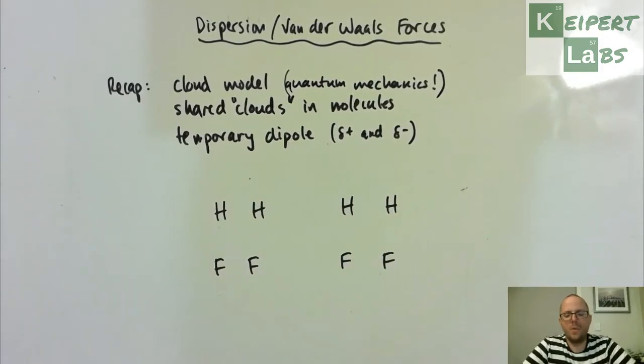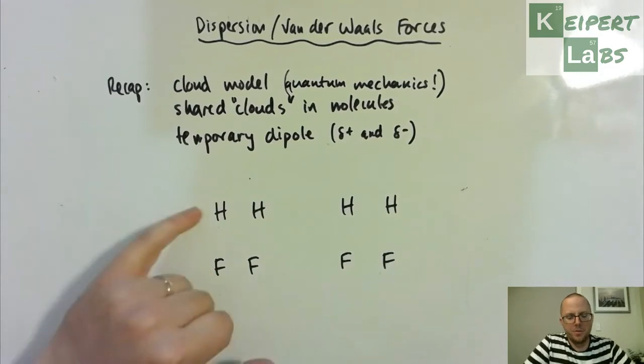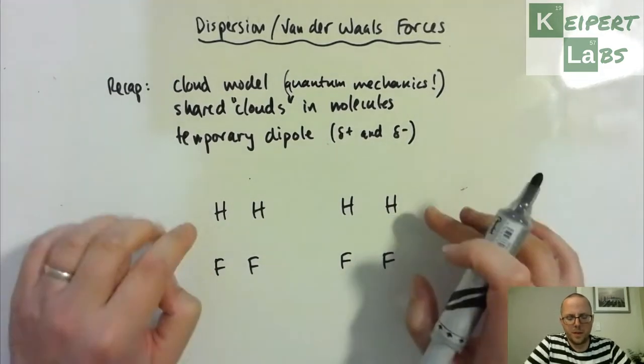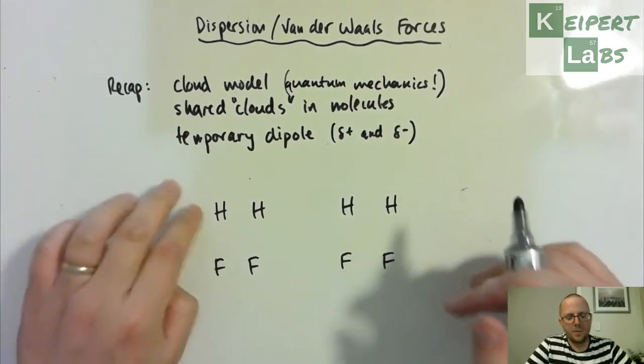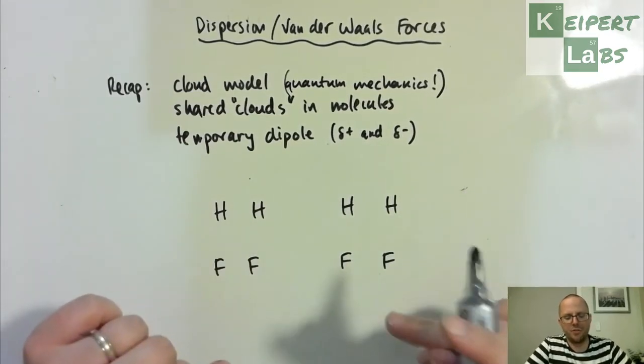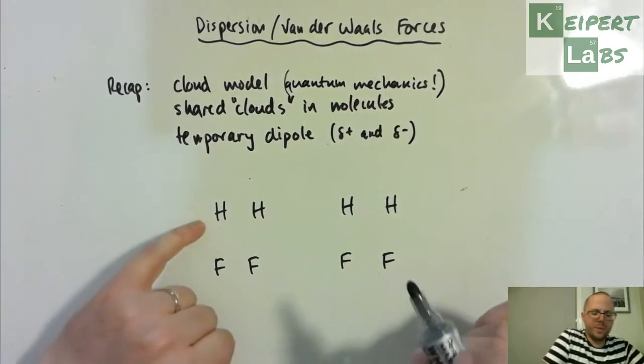What we're going to see now is what happens when those temporary dipoles interact with one another. I have here two pairs of molecules. We're going to show interactions between these two and then these two - molecules of hydrogen gas.